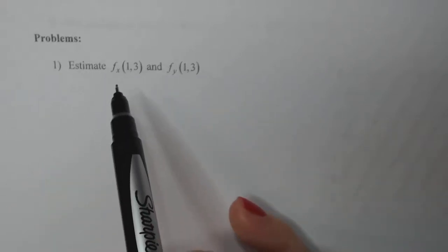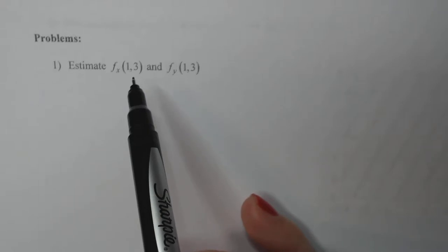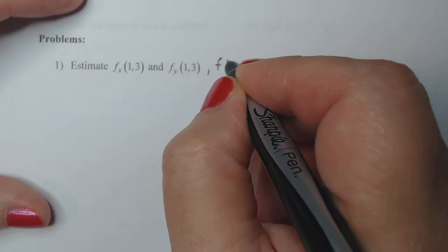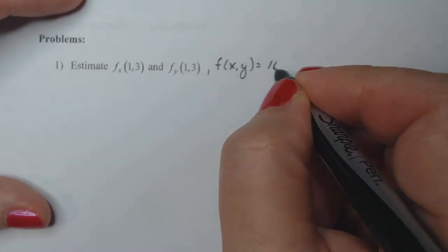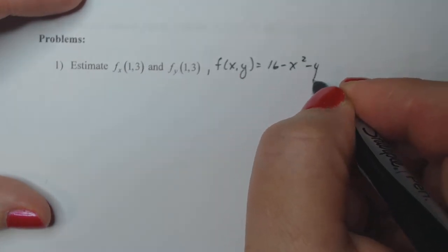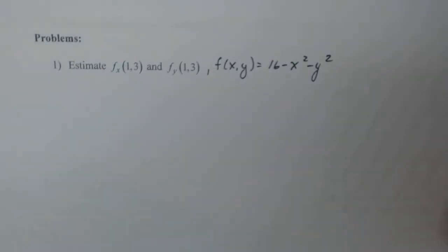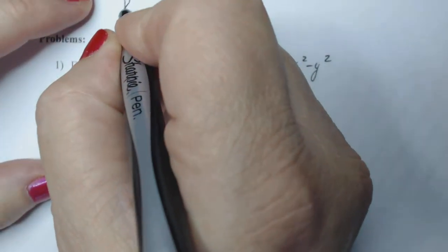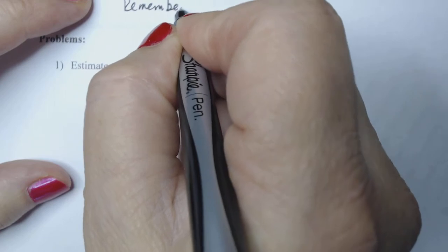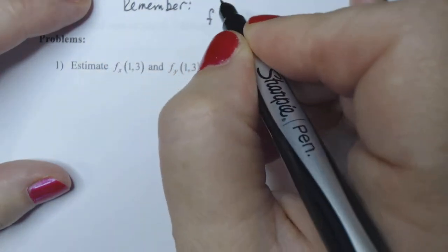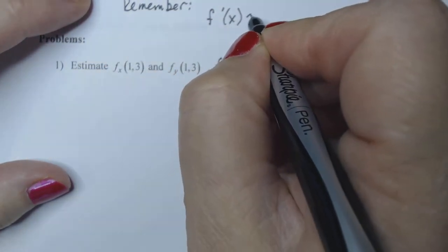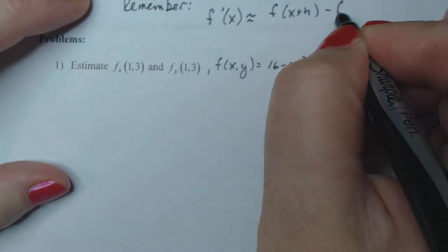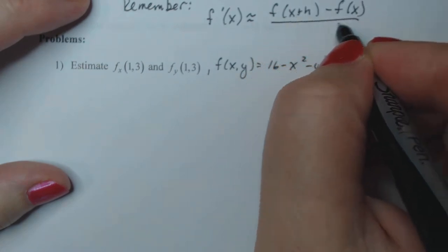In order to complete this problem estimating f sub x at (1,3) and f sub y at (1,3), knowing that f(x,y) is 16 minus x squared minus y squared, we have to remember something from calculus one. We can estimate f prime at a particular value of x by using the difference quotient: f(x+h) minus f(x), all over h.